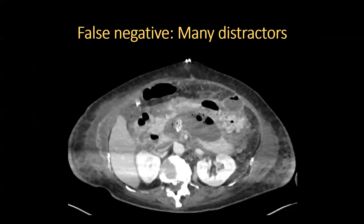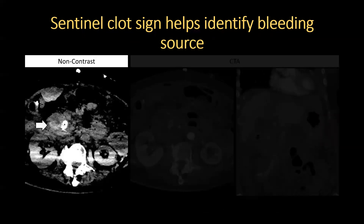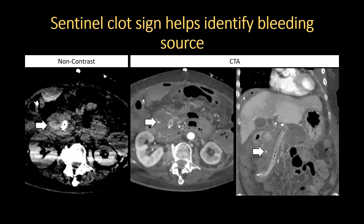Similarly, this next case was challenging due to many abdominal wall and intraperitoneal fluid collections in a 75-year-old woman with necrotizing pancreatitis and bloody drain output. The clinical history tells you where to look — around the drain. The sentinel clot sign can also help narrow your search; the sentinel clot is focal high attenuation clotted blood that provides a clue to the hemorrhage source. On the non-contrast image, we see sentinel clot around the drain, emphasized on liver windows. Axial and coronal CTA images show a focus of contrast extravasation within walled-off necrosis.